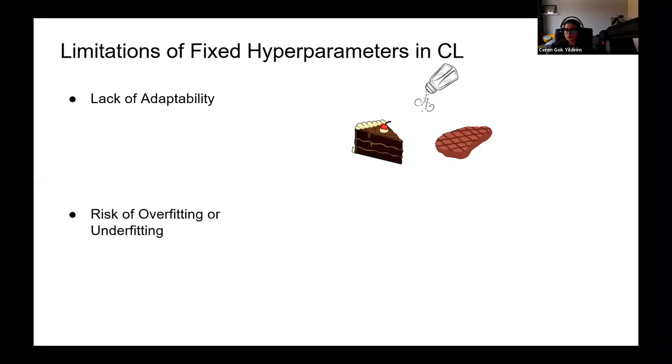However, just as you wouldn't use the same seasonings for both a dessert and a main course, fixed hyperparameters struggle to adapt to the varying complexities of different tasks. Second, risk of overfitting or underfitting. Fixed hyperparameters may lead to overfitting or underfitting, especially when the data characteristics change. Think of fixed hyperparameters like using a single cooking time for all recipes. What if the time was meant for baking cookies but you are making a pasta dish? The result won't be ideal. Similarly, when we apply the same hyperparameters to new tasks, we risk overbaking or undercooking our model, leading to suboptimal outcomes.